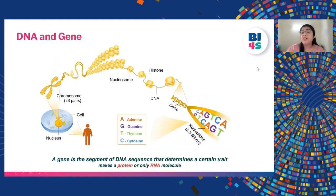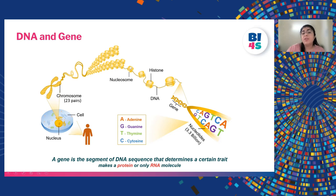In genetics we often use the terms DNA and gene interchangeably because both are the basic units of heredity, but in reality these two things are different. We humans are made up of trillions of cells and each cell contains a nucleus and a cytoplasm. The nucleus is where our genetic material is housed. The nucleus contains around 23 pairs of chromosomes, and chromosomes are made up of units known as nucleosomes — a protein called histone around which our DNA is tightly wrapped.